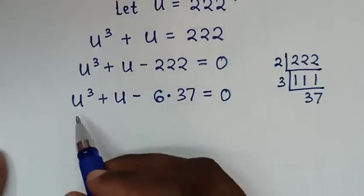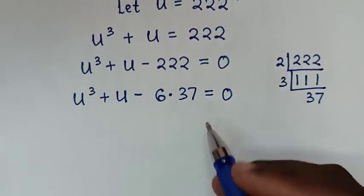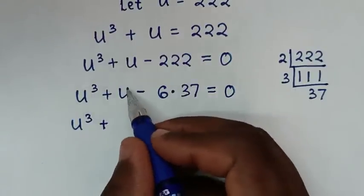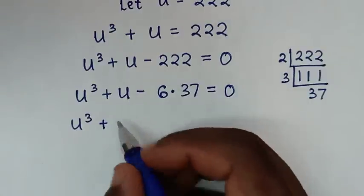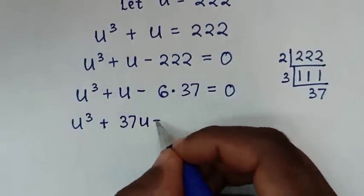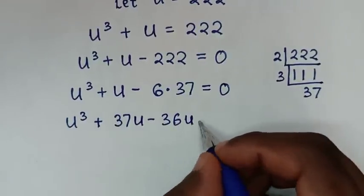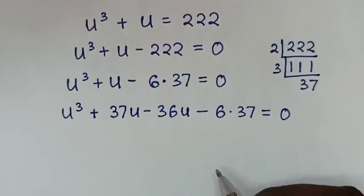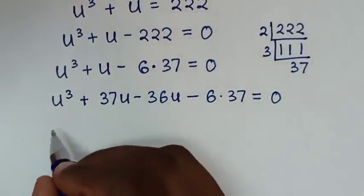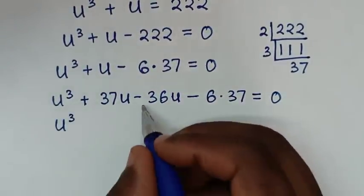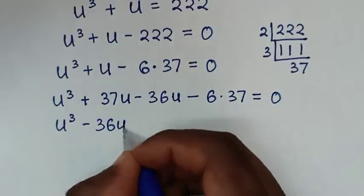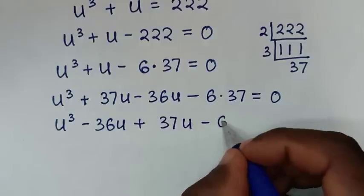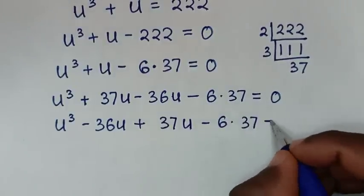We can solve this by grouping and factorization. So we write u³, then we note that u can be split as 37u minus 36u, and then minus 6 times 37 equals 0. Regrouping: u³ minus 36u, then plus 37u minus 6 times 37 equals 0.